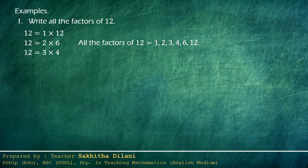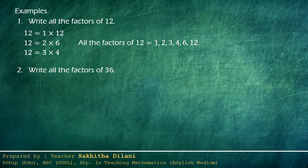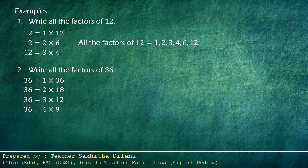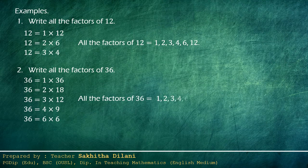Now let's see another example: write all the factors of thirty-six. We can write thirty-six as a product of two whole numbers in many ways: one times thirty-six, two times eighteen, three times twelve, four times nine, and six times six. Then we can list out all the factors of thirty-six: one, two, three, four, six, nine, twelve, eighteen, and thirty-six. There are nine factors for thirty-six.